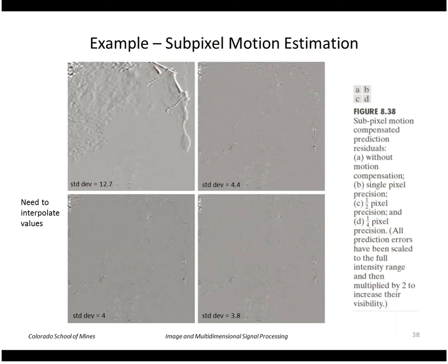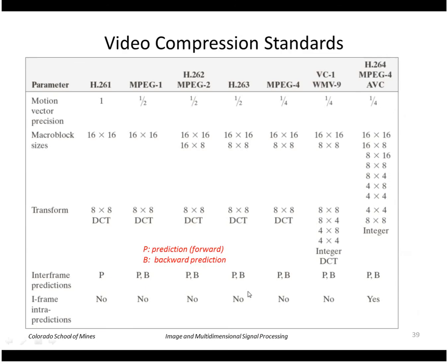We can also even estimate the subpixel precision of those motion vectors to half, quarter, etc. precision. And that does improve the standard deviation of the error. Gets that even lower as you can see.